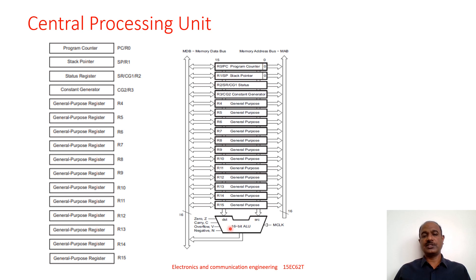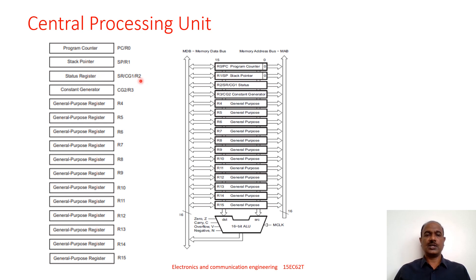The stack pointer address is always an even address, and the program counter address is also always an even address. Register R2 is used for the status register function — whenever instructions are executed, flags such as the zero flag, carry flag, overflow flag, and negative flag are updated by the CPU and stored in this status register.